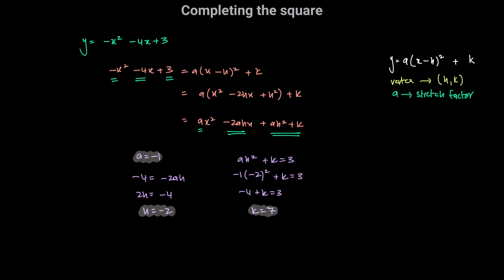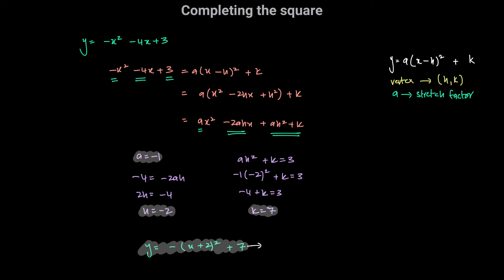Now that we have a, h, and k, we can write the equation of this parabola in completed square form: y is equal to negative 1 times (x minus negative 2) squared plus 7, which simplifies to y equals negative (x plus 2) squared plus 7. The coordinates of the vertex of this parabola are h comma k, giving us the vertex at negative 2 comma 7.